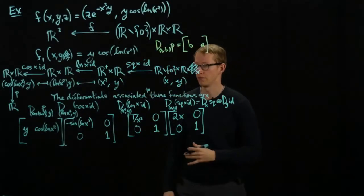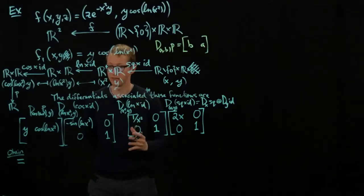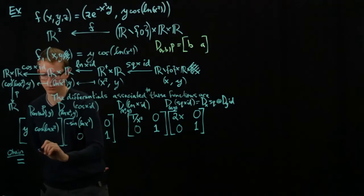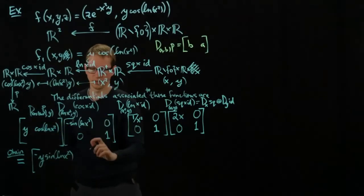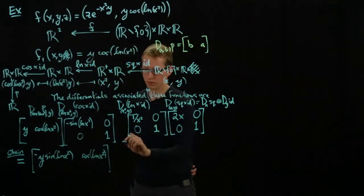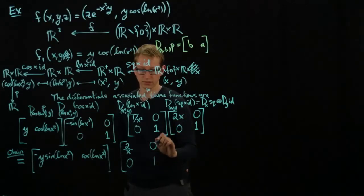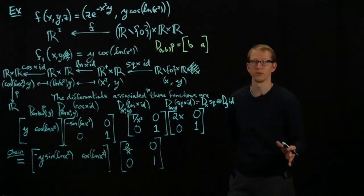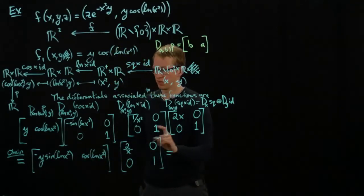To get the resulting Jacobian, we multiply all of these together by the chain rule. This gives us a 1×2 matrix. The first entry is y times the first entry here plus 0, so it's −y·sin(ln(x²)). The next term is just cos(ln(x²)). That's our 1×2 matrix. Multiplying with the 2×2 matrix gives [2/x, 0; 0, 1] combined, yielding the result.